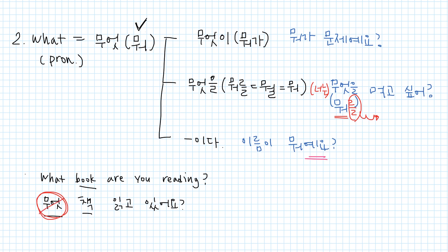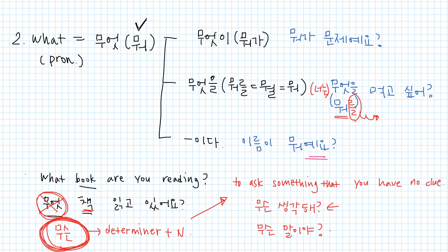A quick question. How do you say what book are you reading in Korean? 무엇 책 book are you reading 읽고 있어요? But this is wrong because 무엇 is the pronoun. In this case, you should use 무슨 책 읽고 있어요? 무슨 is a determiner. It means a noun should be followed after 무슨. That's why here 무슨 책 읽고 있어요? What book are you reading? And 무슨 is used to ask something that you have no clue. For example, 무슨 생각해? What are you thinking about? In this case, you have no clue what your friend is thinking about. 무슨 말이야? What are you talking about? You have no clue what your friend is talking about.